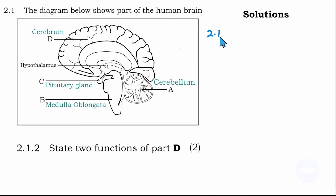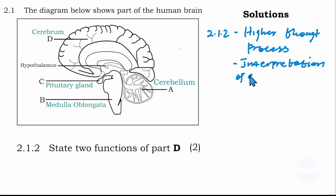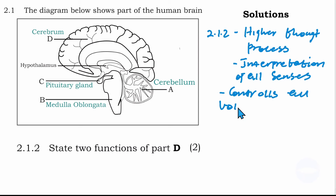For question 2.1.2, the first function is higher thought processes — responsible for our thinking and decision-making, using the cerebrum. The second function is the interpretation of all senses in the body. A third function is that it controls all voluntary actions.